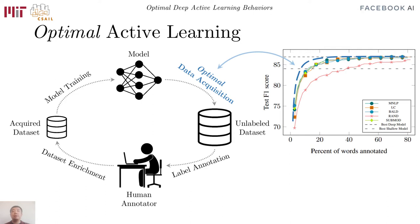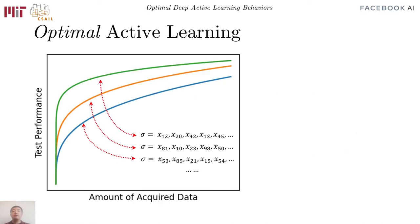In this paper, we propose to search for this optimal strategy, and then analyze its behaviors on several problems. The space of acquisition strategies, however, is ill-defined.